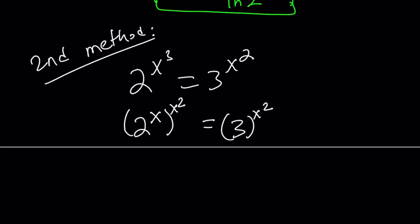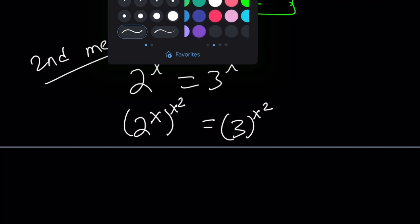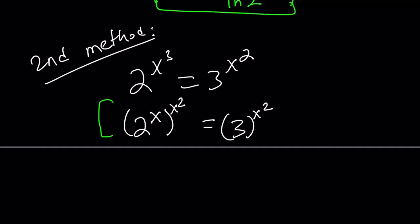Now, we can raise both sides to the power 1 over x squared, since x does not equal 0, or we should say, as long as x does not equal 0. But probably before that, let me do the following.